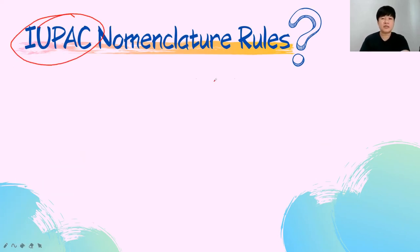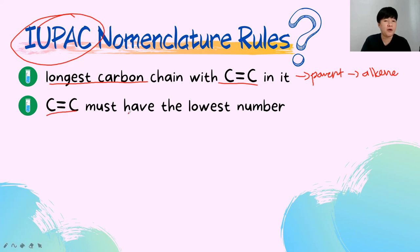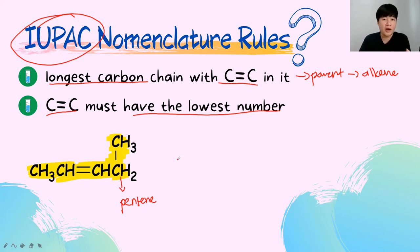For IUPAC nomenclature of alkenes, the longest carbon chain must contain the carbon-carbon double bond. The double bond must receive the lowest possible number. For example, in a 5-carbon chain (pentene), counting from the left gives the double bond position number 2, while counting from the right gives number 3. Since 2 is lower, the parent name becomes 2-pentene.